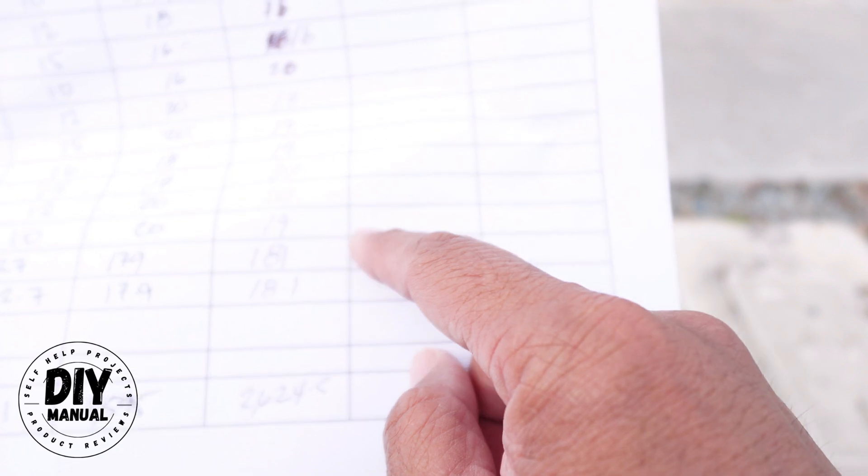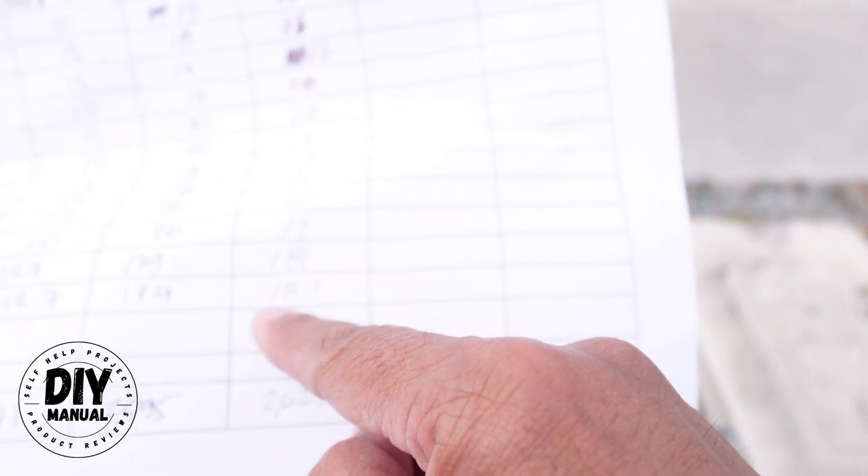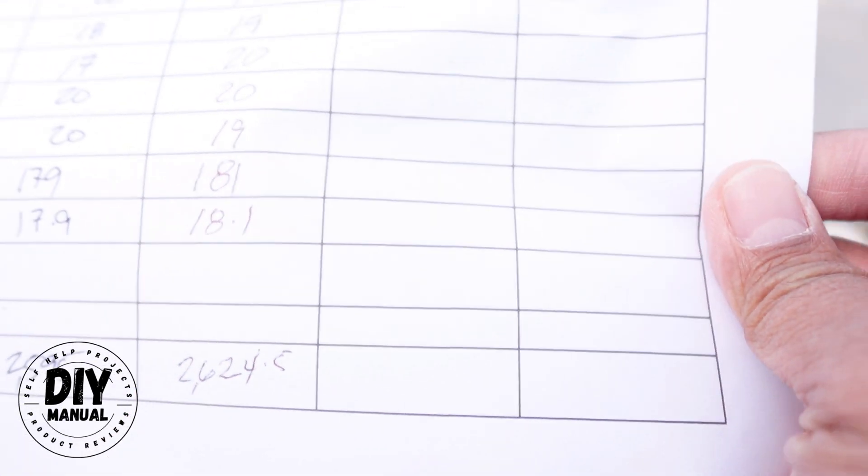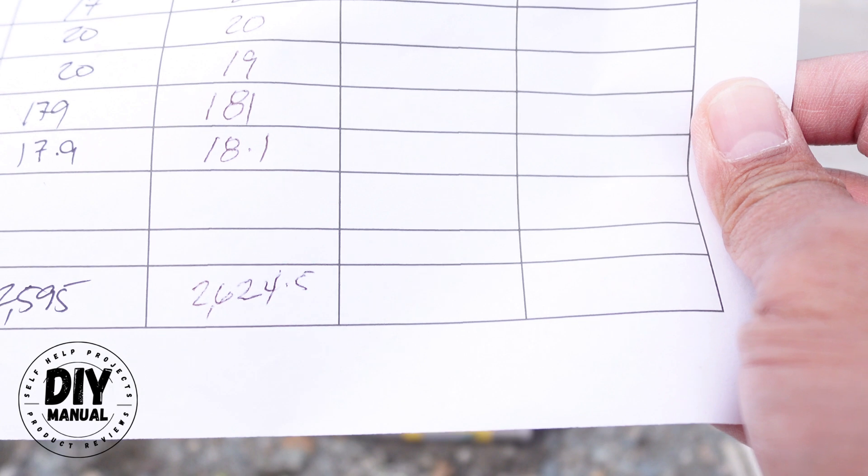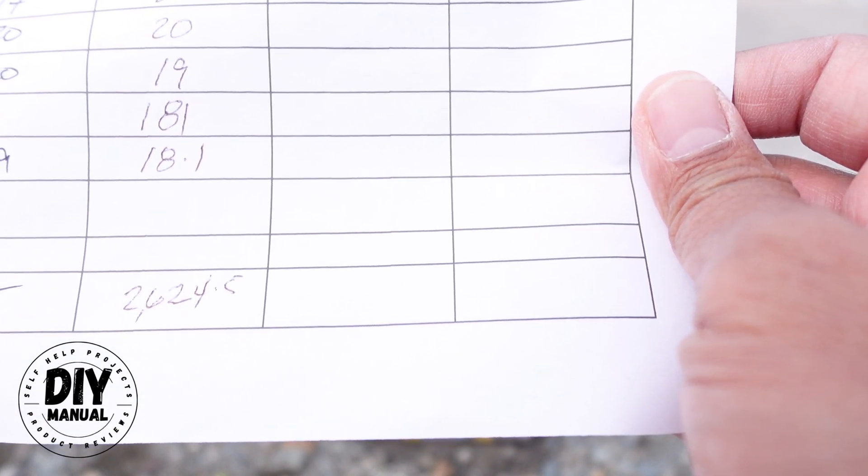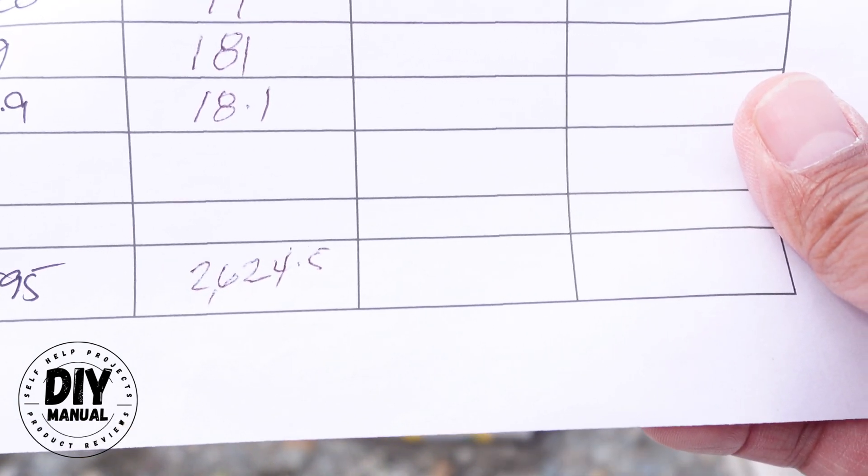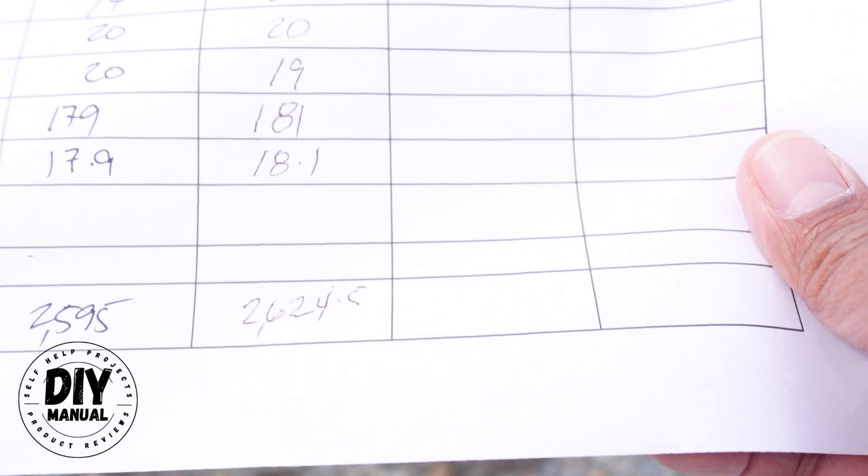For a total of 181. So 181 divided by 10 to get the average, we got 18.1. And basically, we multiply that by 145 because each number is equivalent to 145 PSI. So now we got 2,642.5.